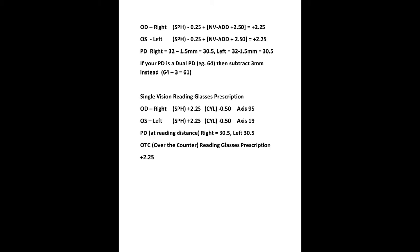Your pupillary distance may be measured in one of two formats. If each eye is given separately, subtract 1.5 millimeters from each of those measurements. If there's a single or dual pupillary distance measurement, subtract 3 millimeters from that, and that gives you your near vision pupillary distance. The cylinder and axis measure astigmatism, and these measurements do not change when calculating your prescription for reading glasses.